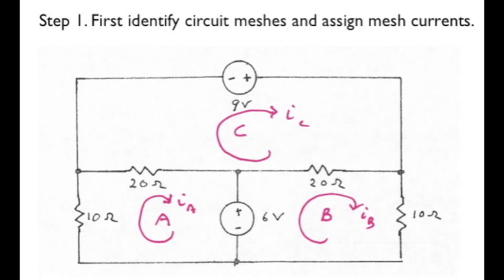The first step is to identify the meshes and assign mesh currents. Our previously numbered lesson describes how to do this. Here we see three meshes, so there are three mesh currents. By convention, they're taken to be in the clockwise direction. I've chosen to label them as I sub A, I sub B, and I sub C.